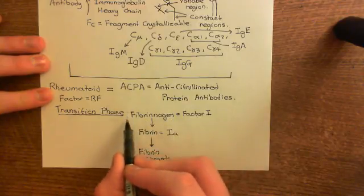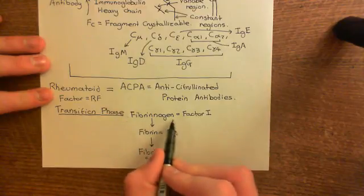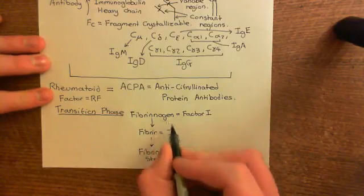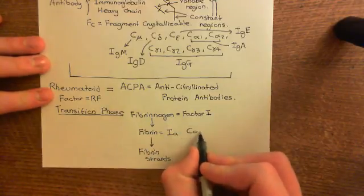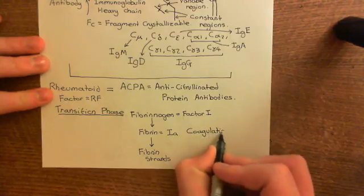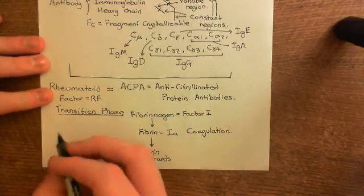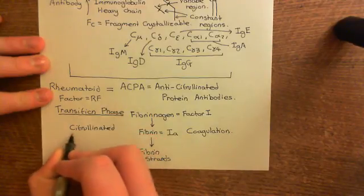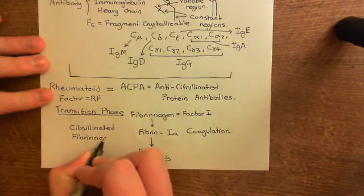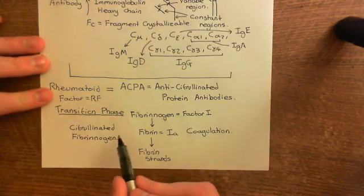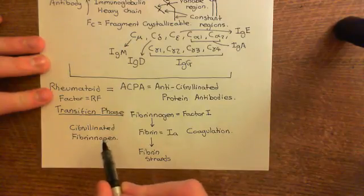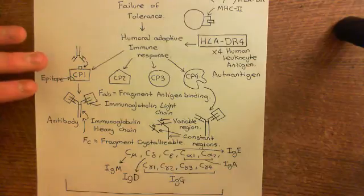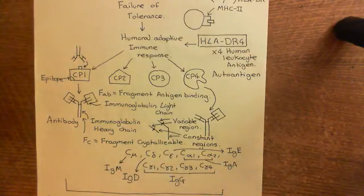Fibrinogen is a protein within the blood that can be activated to fibrin, and then fibrin can be assembled into fibrin strands in the process of coagulation. Some of this circulating fibrinogen may well be converted into citrullinated fibrinogen. In your lack of immune tolerance against citrullinated proteins, you're eventually going to produce an antibody against citrullinated fibrinogen. Remember, in the pre-articular stage, you've gradually been making more and more antibodies against a greater and greater array of citrullinated proteins — starting with citrullinated protein 1, then protein 2 — with continuous failure in immunological tolerance.